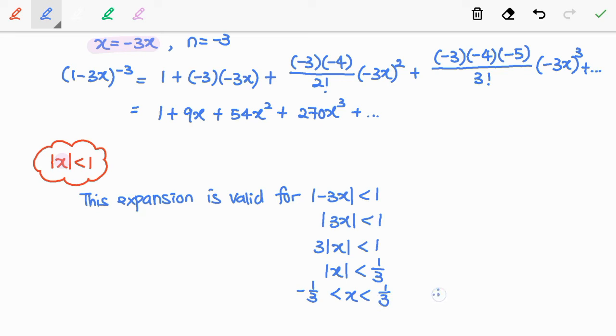This means x is between negative 1 over 3 and 1 over 3. So, the interval in which the expansion is valid is negative 1 over 3, 1 over 3.